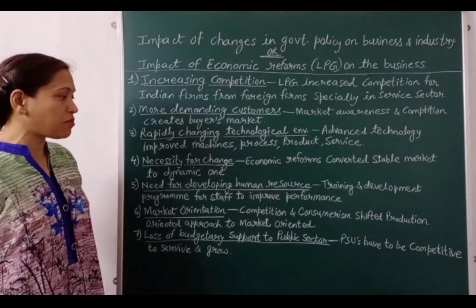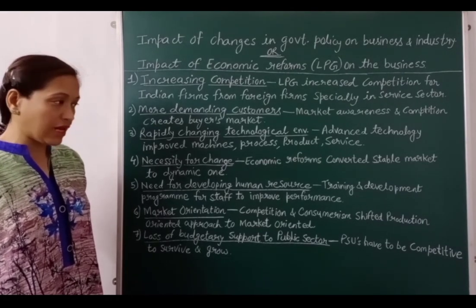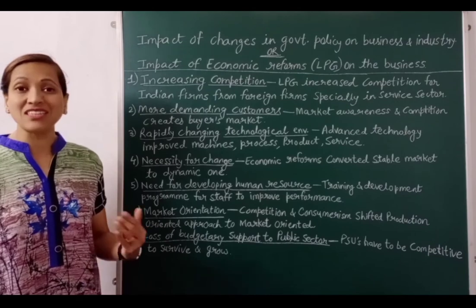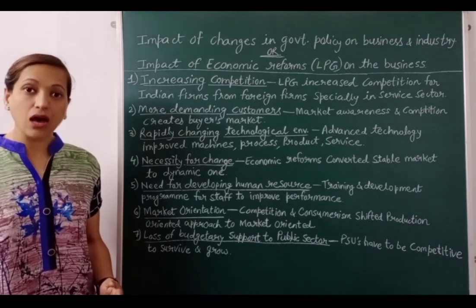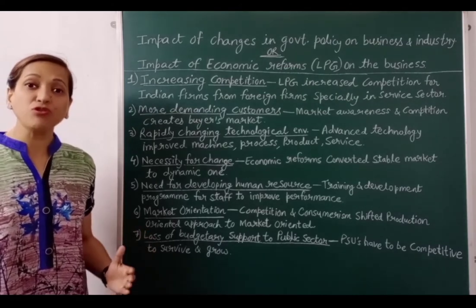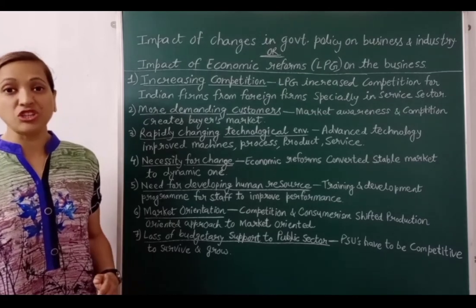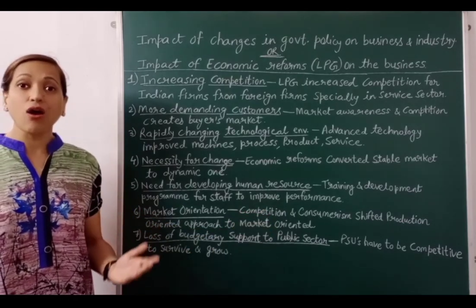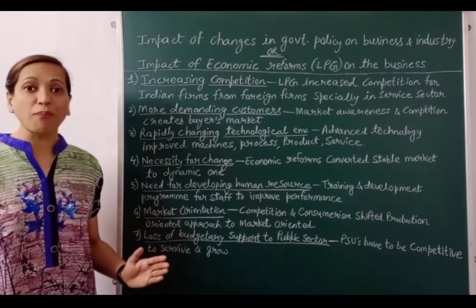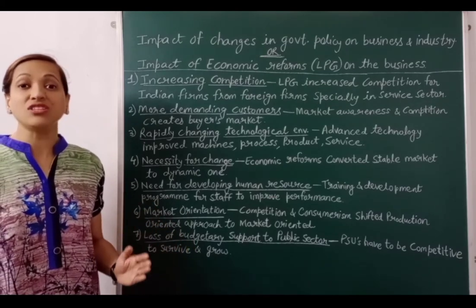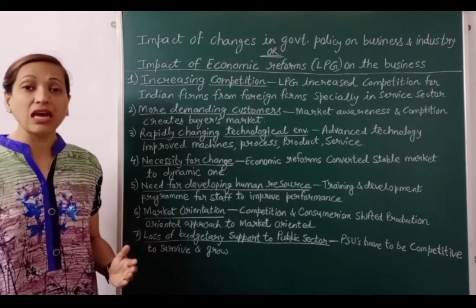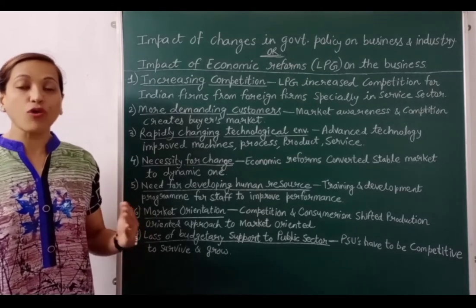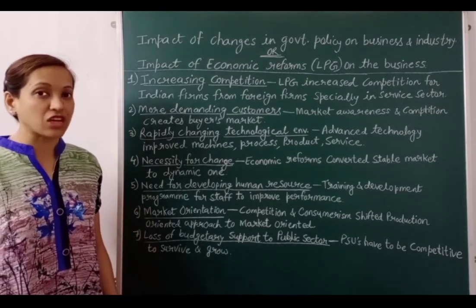The sixth impact is market orientation. Competition and consumerism shifted the production-oriented approach to a market-oriented one. In the production-oriented approach, producers were fewer and consumers were more, so whatever product a producer manufactured would easily sell in the market — producers had their own way in the market. But later, due to competition, the market converted to a market-oriented approach. Now producers increased and consumers became relatively fewer, so competition among producers began. Market research became necessary. Producers started identifying what the consumer's needs and wants are, at what price they prefer to purchase goods, and accordingly began manufacturing their products.